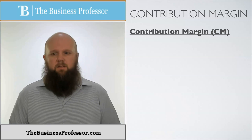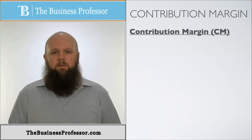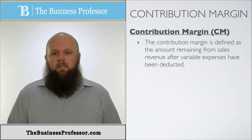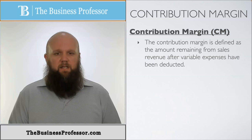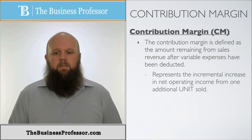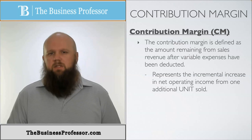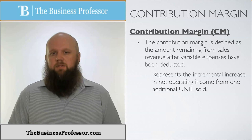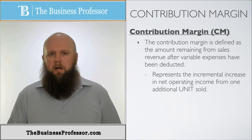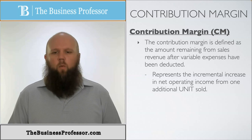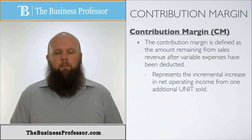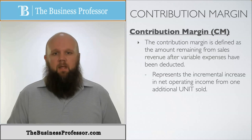In order to do CVP analysis, there's one major concept you need to be aware of: the contribution margin. The contribution margin is defined as the amount remaining from sales revenue after variable expenses have been deducted. This represents the incremental increase in net operating income for one additional unit sold, making it very useful for quick decision-making.